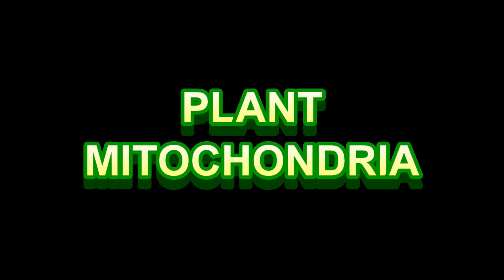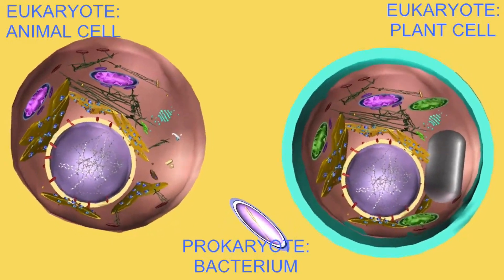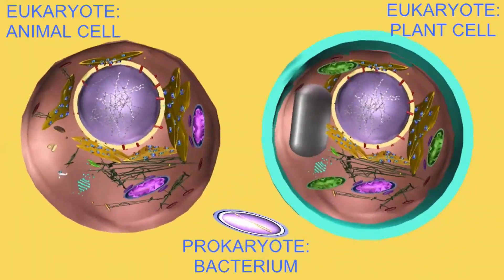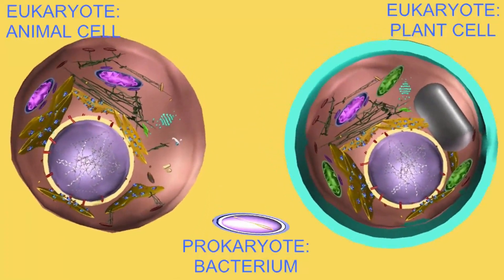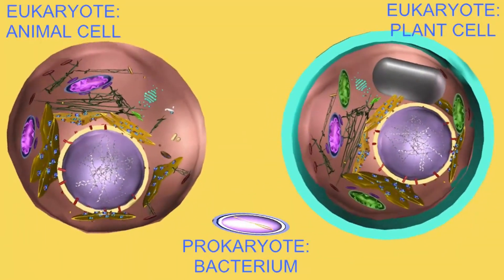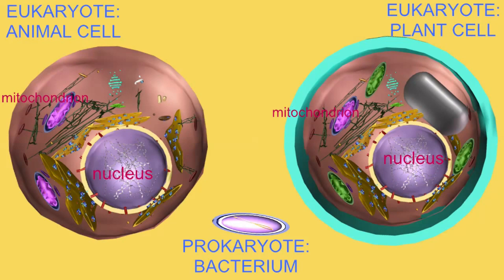There are a number of differences which distinguish plant cells and animal cells. Many people feel that animal cells have mitochondria — this is why animals use oxygen — while plant cells have the chloroplast. That's how they produce oxygen, because of the photosynthesis that occurs in the chloroplast. And this is true.